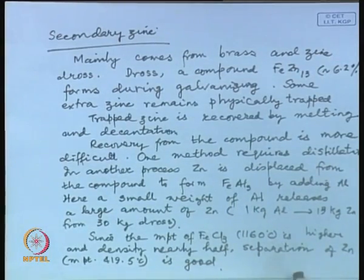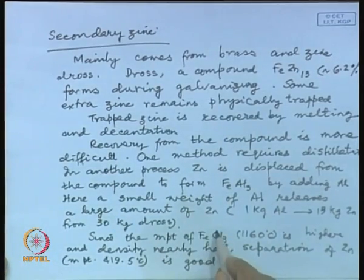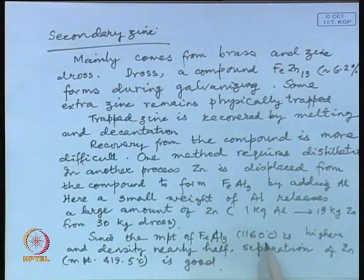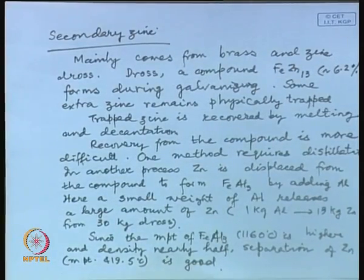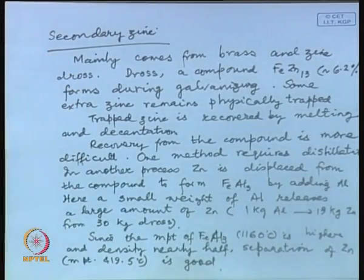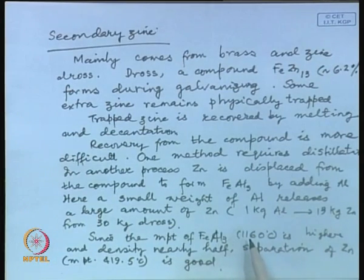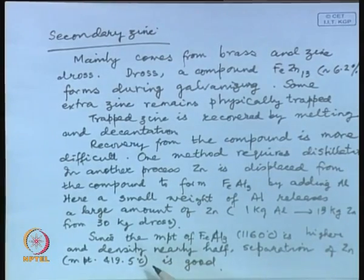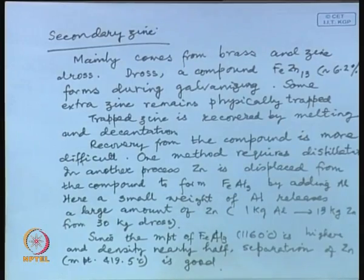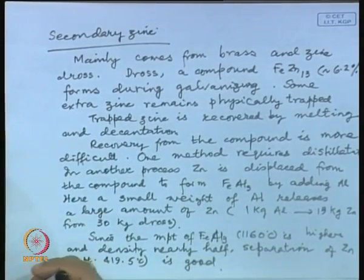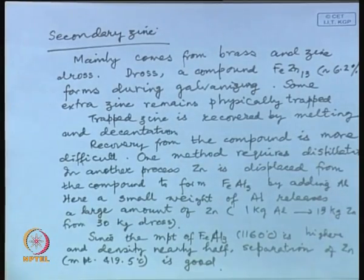This aluminum displacement process is very attractive because the melting point of FeAl₃ is 1160°C - higher - and its density is half that of zinc (melting point 419°C). So in the dross, when we add aluminum, FeAl₃ forms and separates out very easily from liquid zinc. We have a clean separation of molten zinc and solid FeAl₃, but we do consume a certain amount of aluminum. These two processes are very important for recovery of lead and zinc.